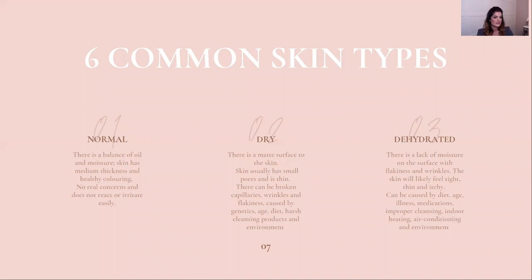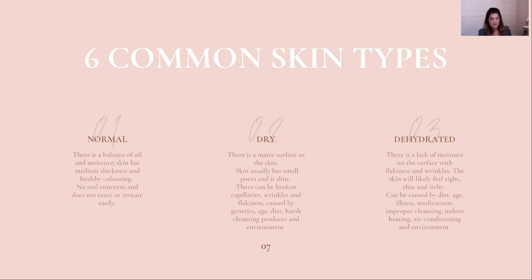Here are our six common skin types. Normal skin is pretty much what it sounds like — medium thickness, healthy coloring, not red and splotchy, not much irritation. You don't get overly oily in the day and you're not really overly dry. Anything works on your skin. These are the people who can wash their face with a bar of soap and use hand cream on their face with no issues. Those people make me jealous — they're kind of like the unicorns of skincare.